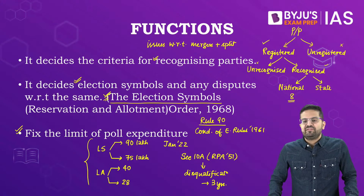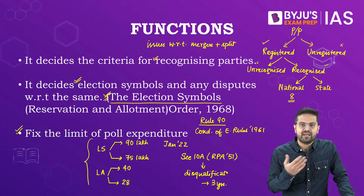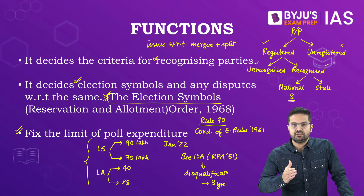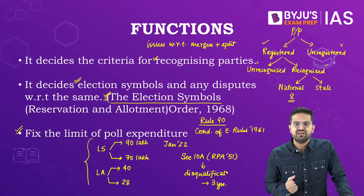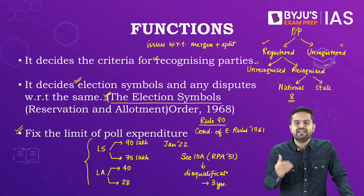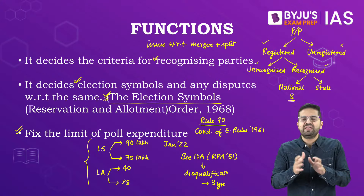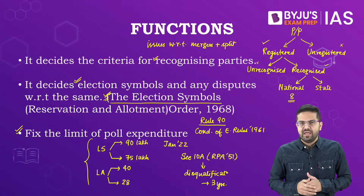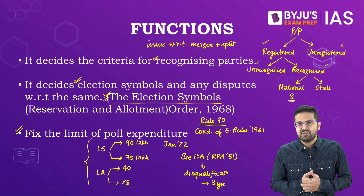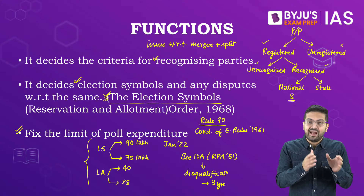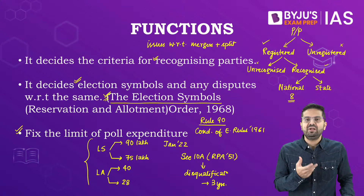Question on when the MCC came into existence: The concept began in the 1960s in some states like Kerala, where parties came together and agreed not to misuse the festival of democracy or create animosity. Finally in 1974, the Election Commission of India came up with the concept that political parties should behave in a decent and cordial manner in the run-up to elections. There are guidelines for candidates, opposition members, processions, manifestos, social media, and for the political party in power — that they should not misuse their position to manipulate elections.